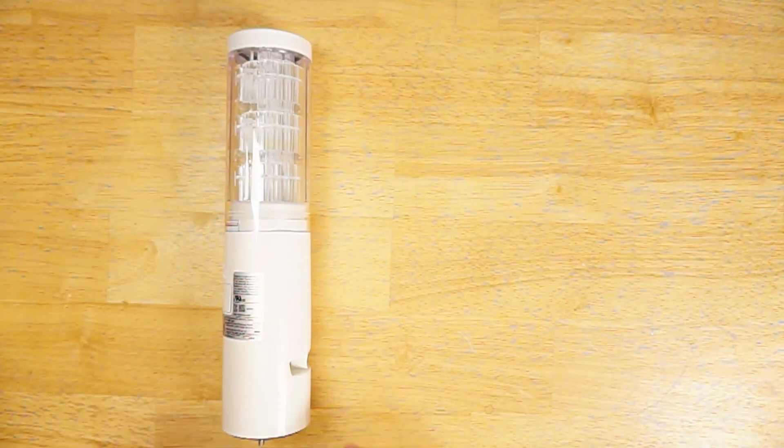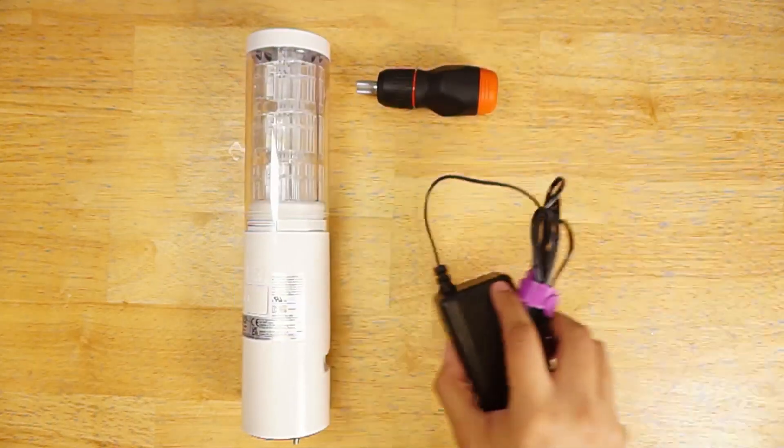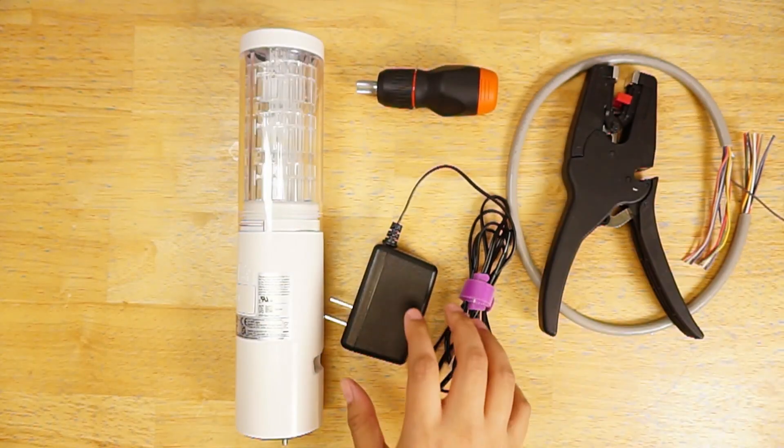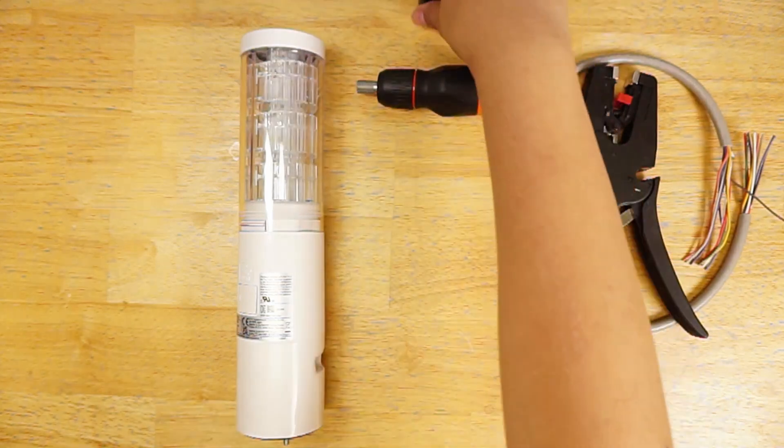Today we are going over some wiring for the LA6 terminal style. We have some tools to help us out with the wiring: a screwdriver, a 24 volt DC power supply, some wires, and a wire stripper.